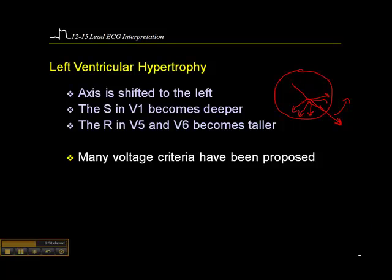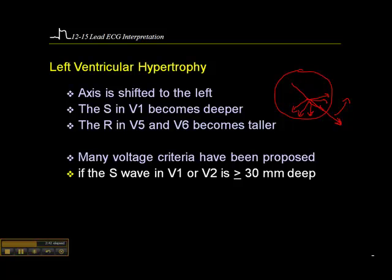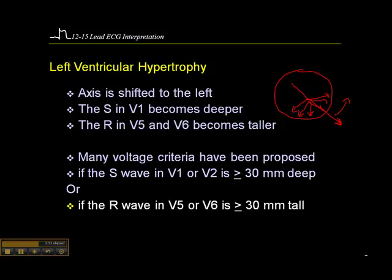The diagnosis would be confirmed with an echocardiogram. If the S wave in V1 or V2 is equal to or greater than 30 millimeters deep, or the R wave in V5 or V6 is 30 millimeters or more tall, we have the criteria for ventricular hypertrophy. This has become the most widely accepted voltage criteria for left ventricular hypertrophy.